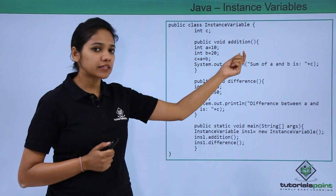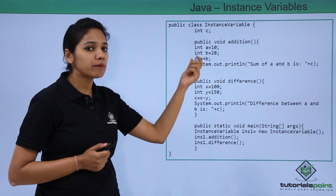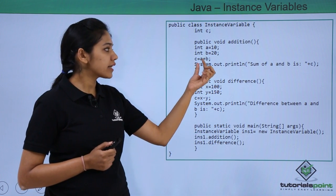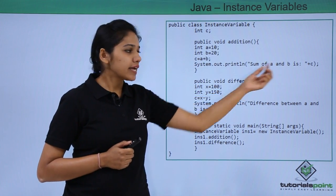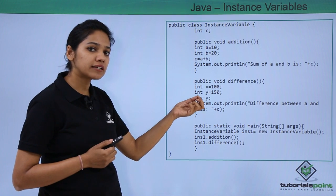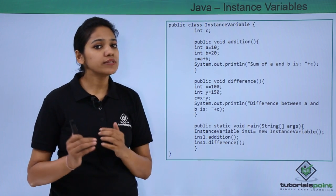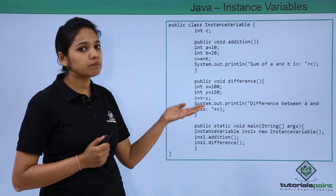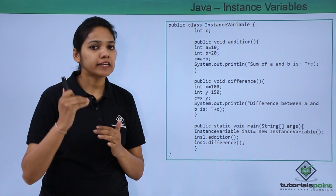In the first method we have declared two local variables a and b. These a and b are local to the addition method and cannot be called by any other method. We calculate the sum of a and b and store it in c. In the second method we have two different integers x and y, local to the difference method. You can reuse variable names like a and b in different methods because variables defined under one method cannot be called outside it.